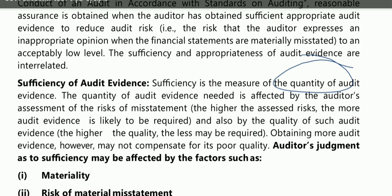And also by the quality of such audit evidence — the higher the quality, the less may be required. So if the quality of audit evidence is high — meaning it is appropriate and reliable — then even a smaller quantity of audit evidence will be sufficient to form a proper opinion. Two things matter: the risk you have identified and the quality of the evidence obtained.